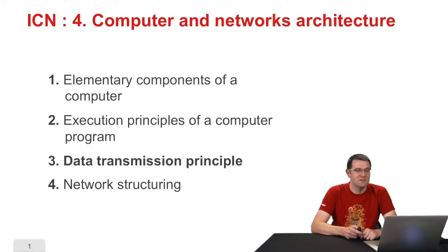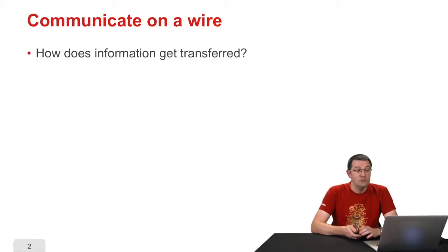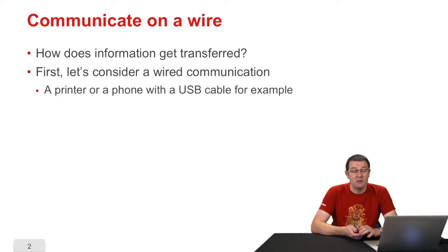Hello everybody, welcome to this third section about computer architecture and networks. We saw how a computer works and how it executes programs. Now we are going to talk about network communication. First, let's see how information is transferred on a wire — for example, between a computer and a printer via USB, or between a computer and a phone.